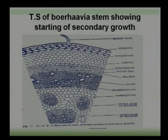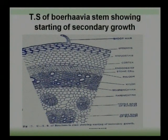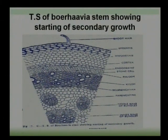After the endodermis, there is a single layer pericycle. In this diagram the pericycle is not clear — it becomes indistinct. Although in a normal stem, just below the endodermis, sclerenchymatous cell patches form the pericycle. The arrows indicate the position of the sclerenchyma cells.